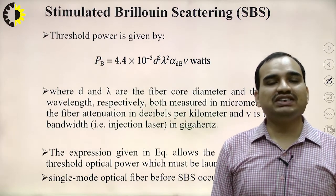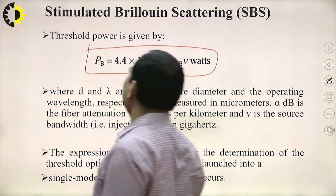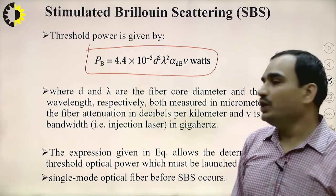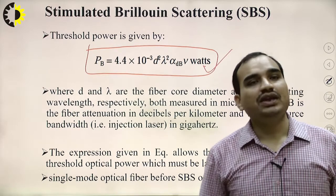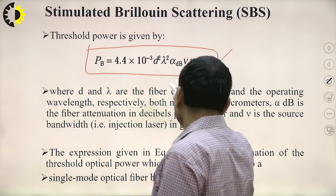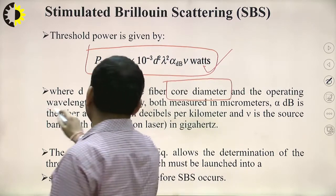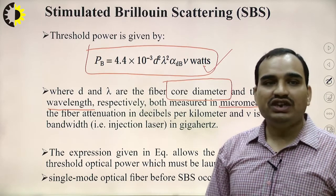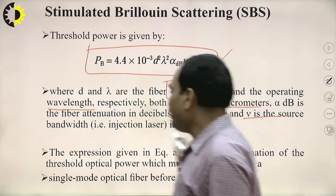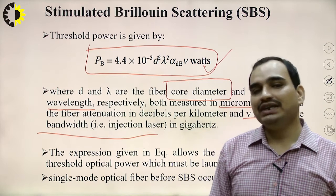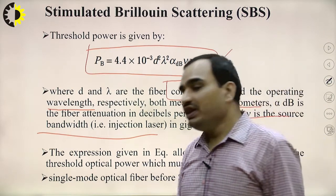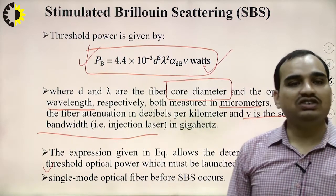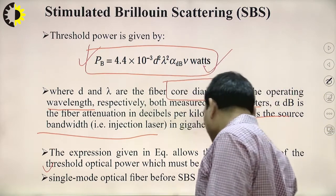The threshold power for SBS is: Pb = 4.4 × 10⁻³ · d² · λ² · α_dB · ν, where d and λ are the fiber core diameter and operating wavelength in micrometers, α is the attenuation in decibels, and ν is the source bandwidth (injection laser) in GHz. This expression allows determination of the threshold optical power that must be reached in a single-mode optical fiber before SBS occurs.